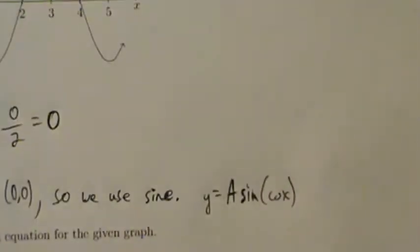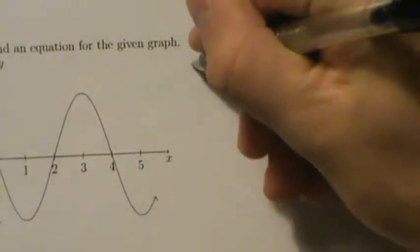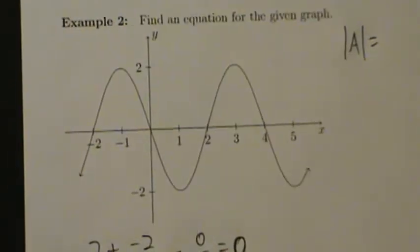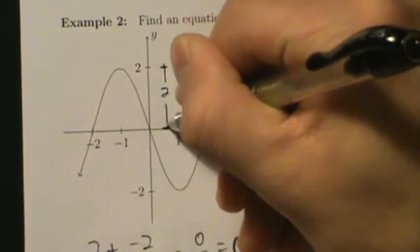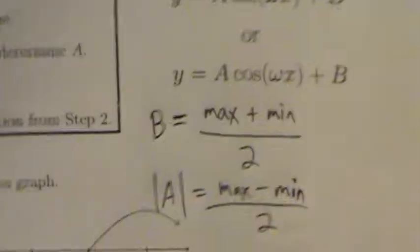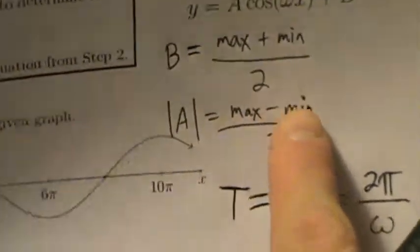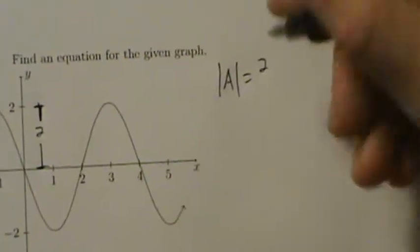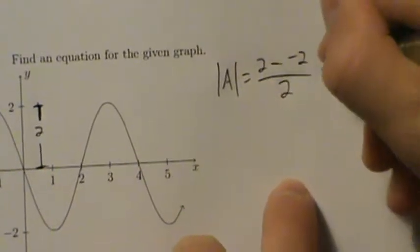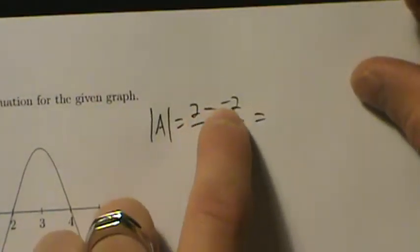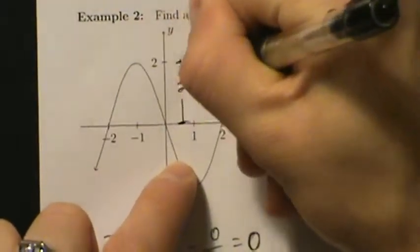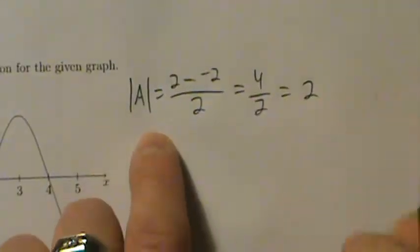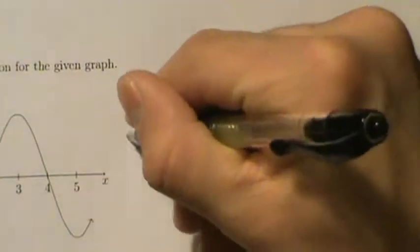Step three: find the amplitude — the absolute value of A — and use it to determine A. We can look at the distance from the max value to the middle, which since there's no vertical shift is just zero, giving a distance of two. Or, to show algebraic work: |A| = (max − min) / 2 = (2 − (−2)) / 2 = 4 / 2 = 2. So the amplitude is two.